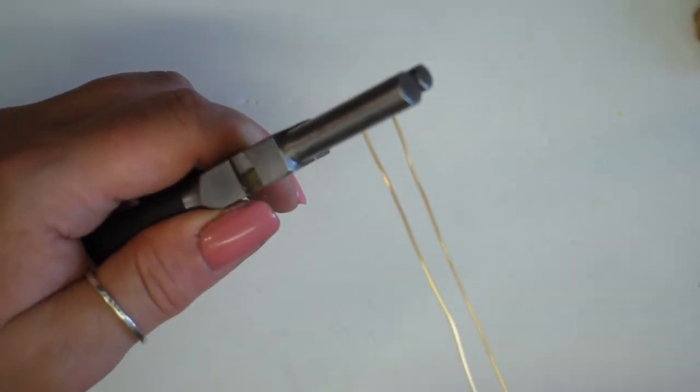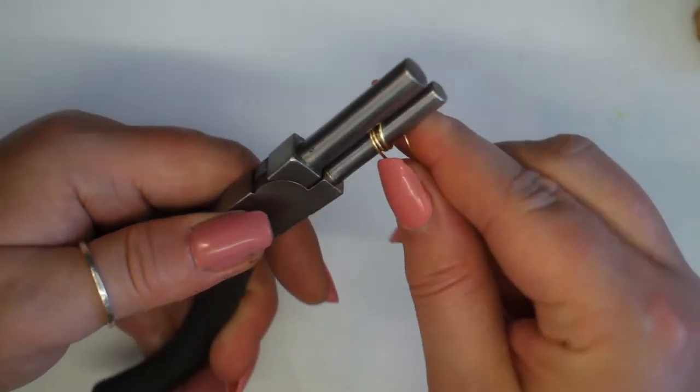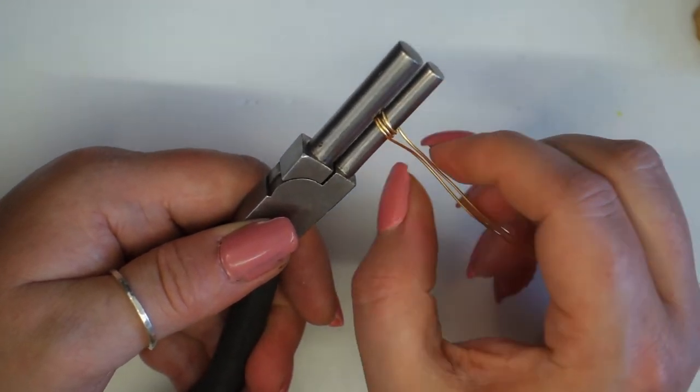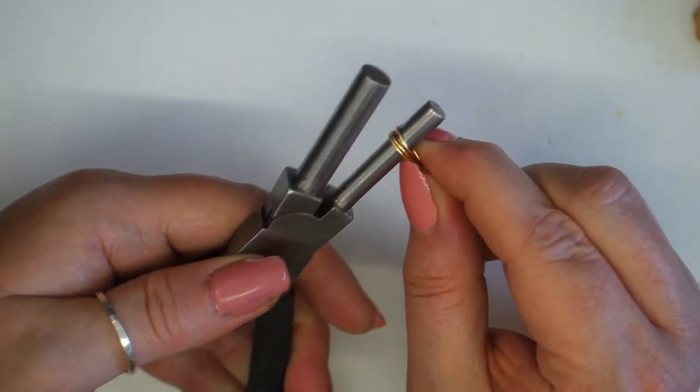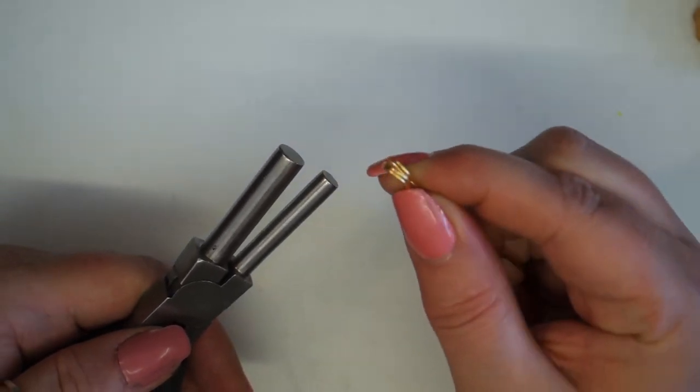So again bring that wire around, opening your pliers, bringing it all the way down and I'm pinching the wires together as you can see there. And if I open that up you can see it's like a little spring with a little coil.